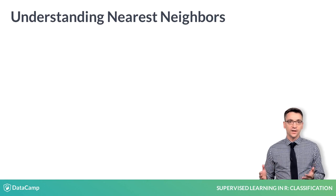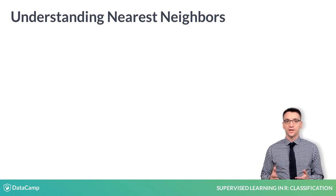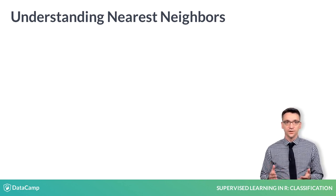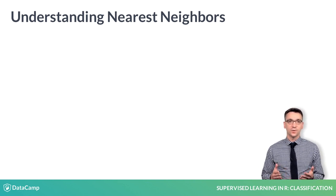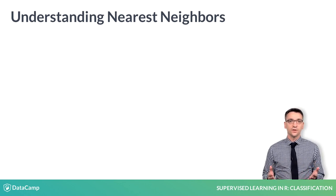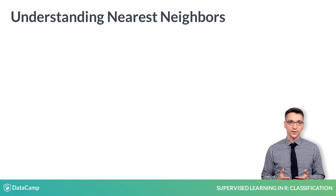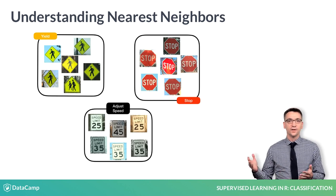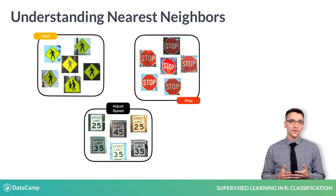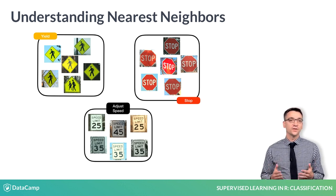To start training a self-driving car, you might supervise it by demonstrating the desired behavior as it observes each type of sign. You stop at intersections, yield to pedestrians, and change speed as needed. After some time under your instruction, the vehicle has built a database that records the sign as well as the target behavior. The image here illustrates this dataset. I suspect you already see some similarities — the machine can too.